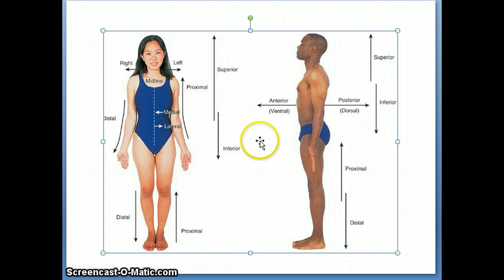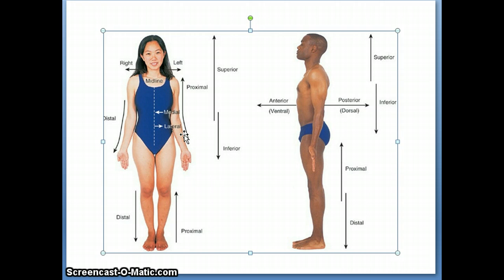The next set of terms is superficial and deep. Superficial is going to be closer to the surface, and deep is going to be deeper than the superficial part. An example: it goes your skin, your fat, and your muscle. So, what would your skin be compared to muscle? The skin would be superficial to your muscle, and the muscle would be deep to the skin. You'll see us use those terms a lot — superficial and deep — when we get to the muscles. If one muscle is on top of the other one, the one on top is considered superficial, and the one on the bottom is considered deep.